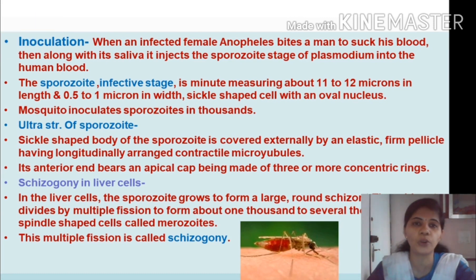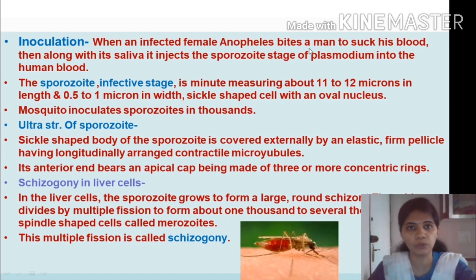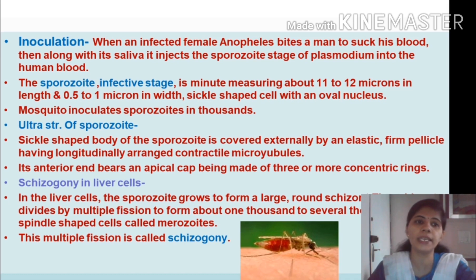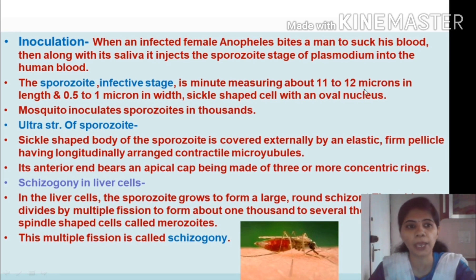The first process is inoculation — how the parasite enters the human body. When an infected female Anopheles mosquito bites a man to suck his blood, along with its saliva it injects the sporozoite stage of Plasmodium into the human blood. The sporozoite is the first stage to enter the body and is known as the infective stage. It is microscopic, measuring 11 to 12 microns in length, sickle-like in shape with an oval nucleus.